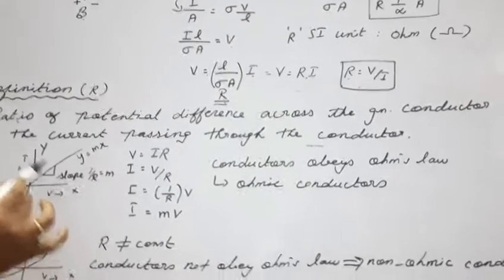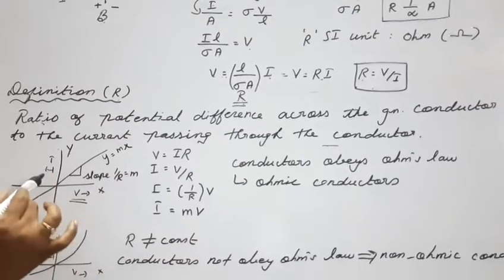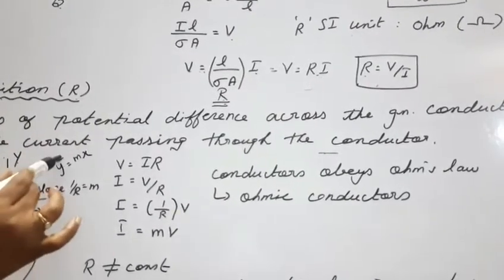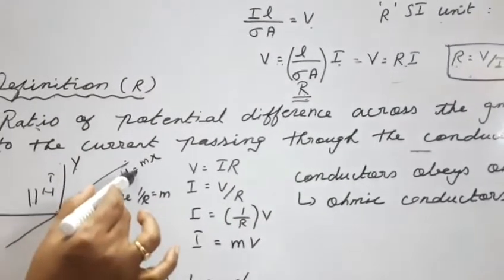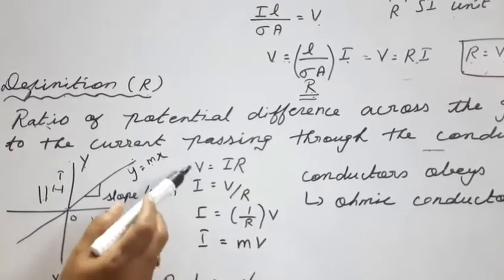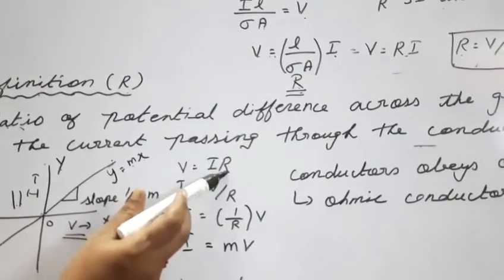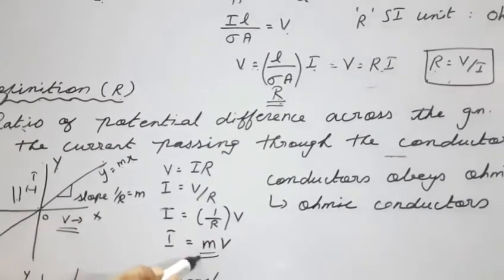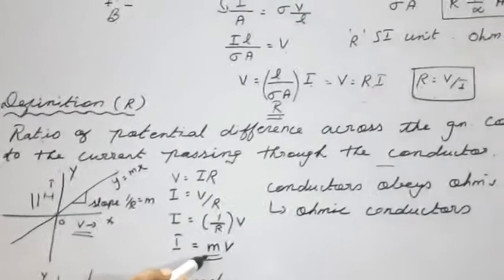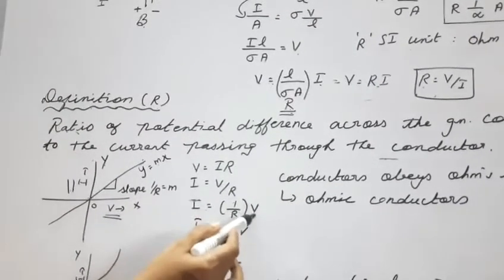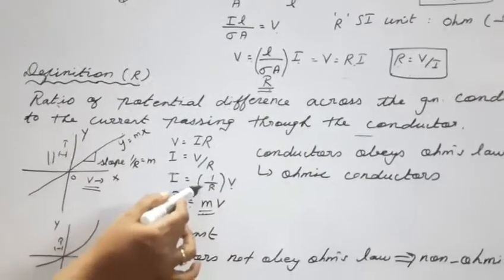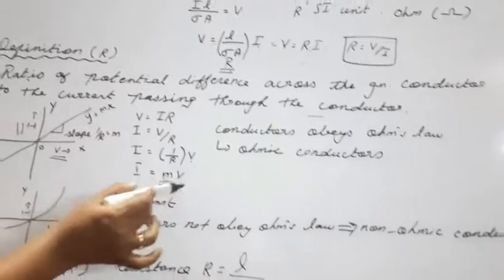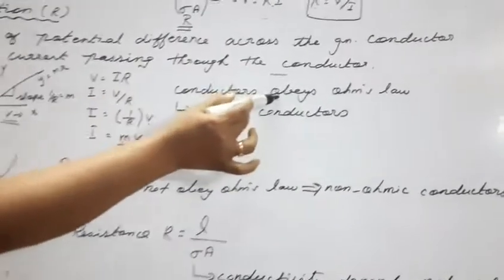For the graphical method of Ohm's law, we take voltage on the x-axis and current on the y-axis. A straight line passing through the origin represents the relationship. Mathematically, y = mx corresponds to I = (1/R)·V, where 1/R is the slope m. Since this matches the form of Ohm's law, conductors that produce this straight-line graph are called ohmic conductors.